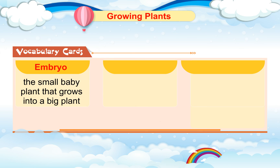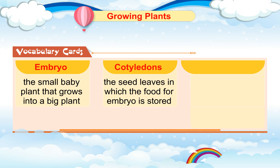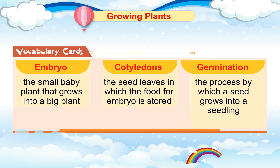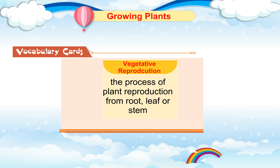Vocabulary cards. Embryo: the small baby plant that grows into a big plant. Cotyledons: the seed leaves in which the food for the embryo is stored. Germination: the process by which a seed grows into a seedling. Vegetative Reproduction: the process of plant reproduction from root, leaf or stem.